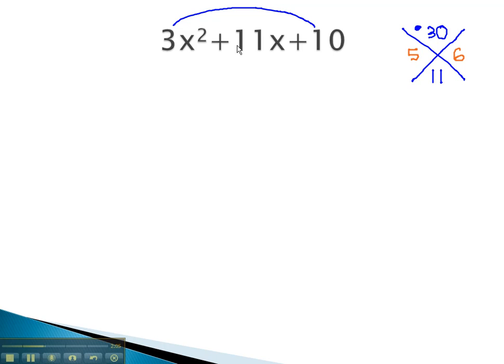This is the pair of numbers we will use to get the 11x in the middle. We will use 5x and 6x.